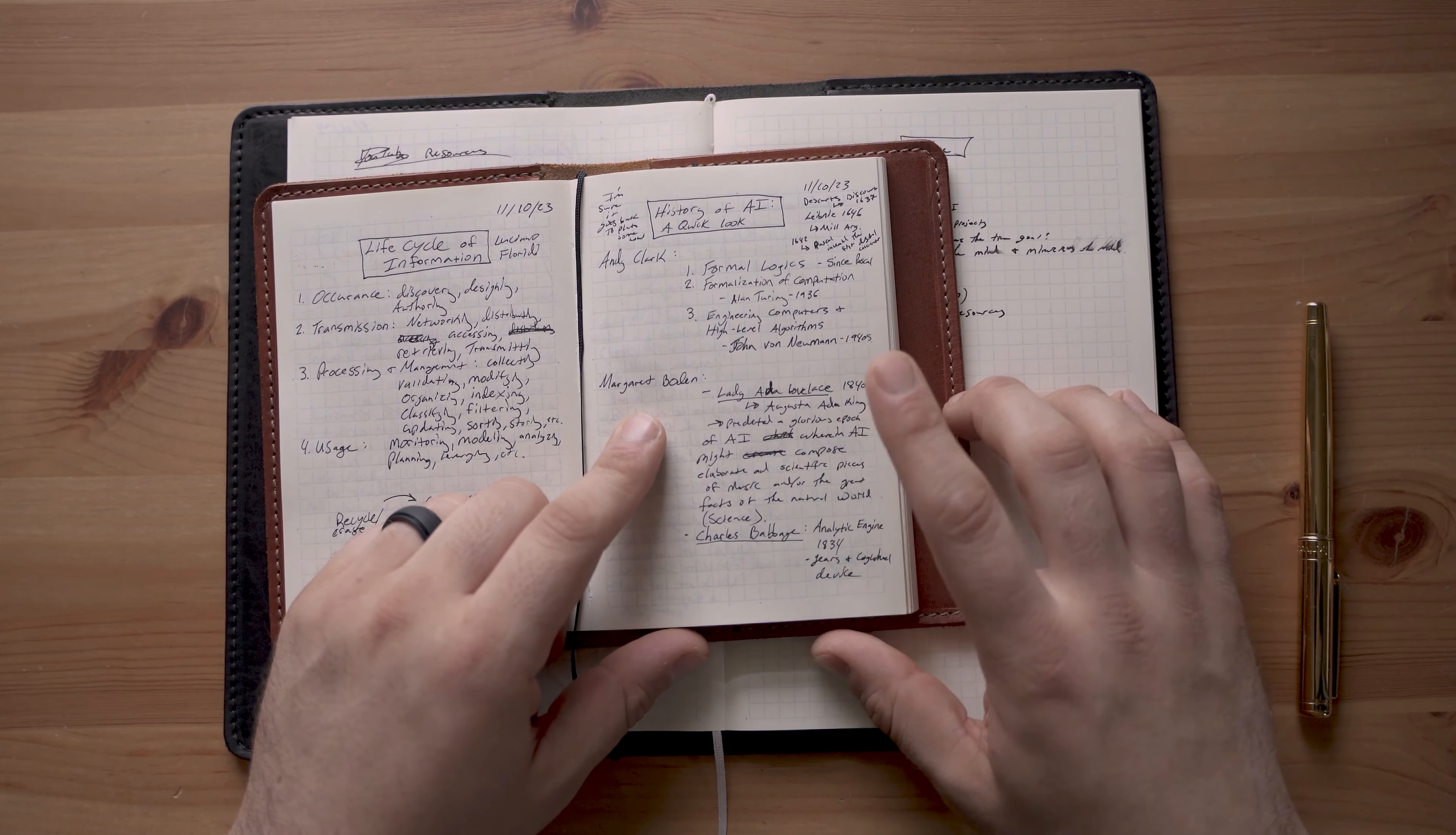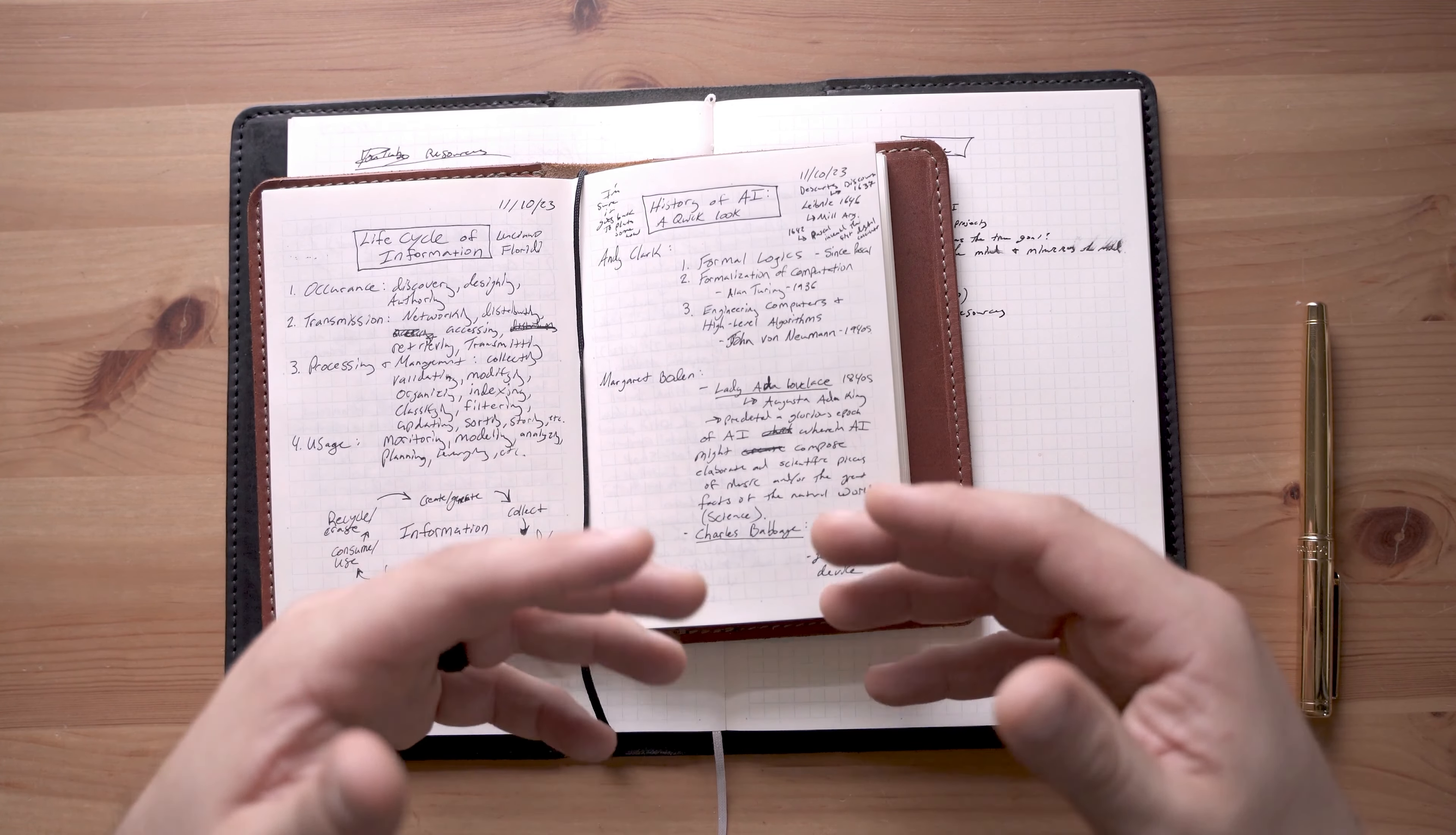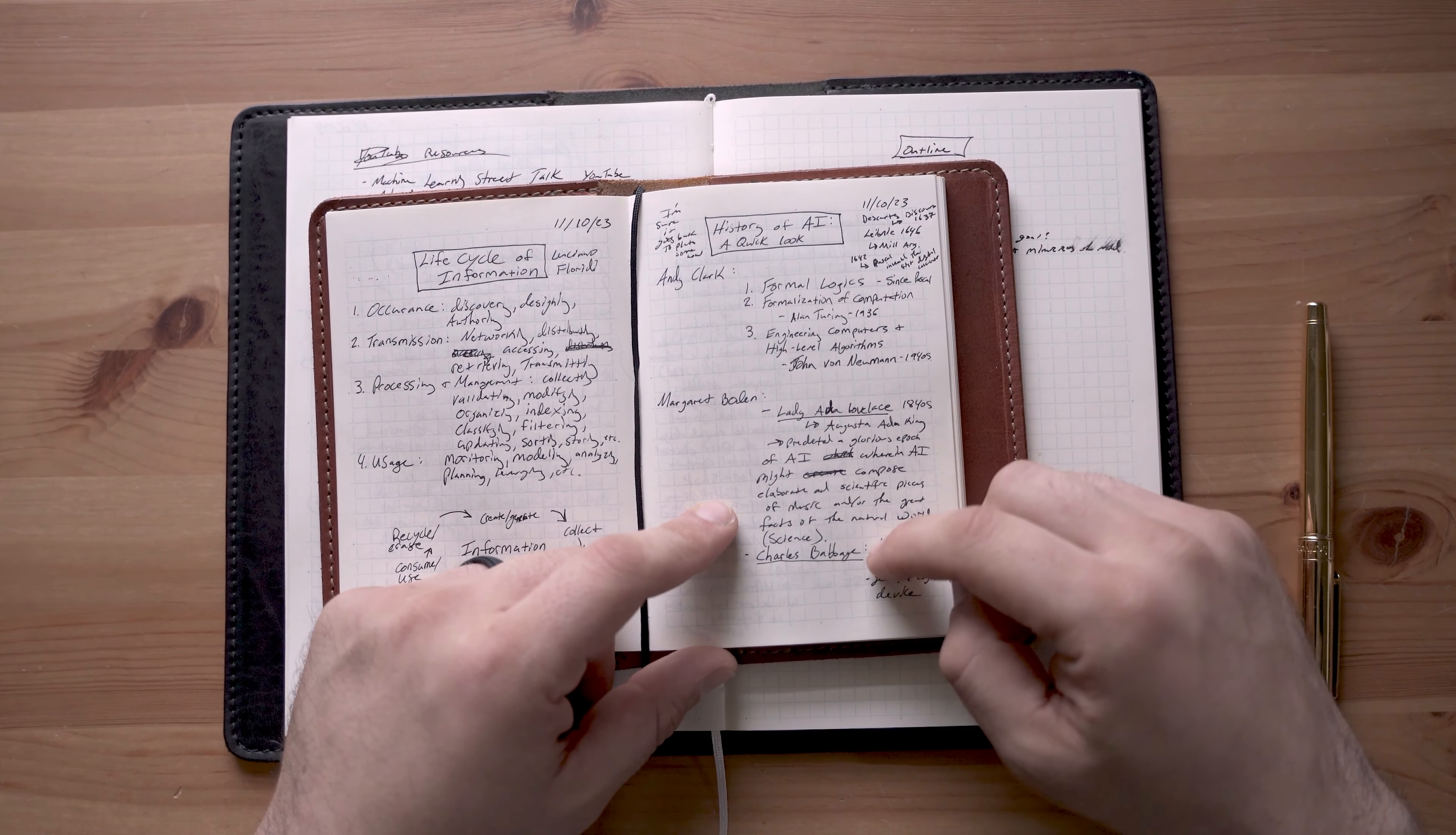But Bowden traces it back to the 1840s with Lady Ada Lovelace. She was thinking about proto-robots and artificial intelligence, though not by that name. And she predicted this glorious epoch of AI, where an AI might compose elaborate scientific pieces of music, and there'd also be a scientific revolution brought on by artificial intelligence. It looks like she was kind of grasping at what we call the singularity today. Her friend Charles Babbage had this idea of an analytic engine. This was like the first actual AI robot. That was in 1834. It was made of gears and cogwheels, and it was ultimately unsuccessful, but it was like the first stab at an actual artificial robot automata.